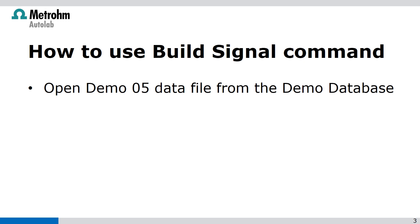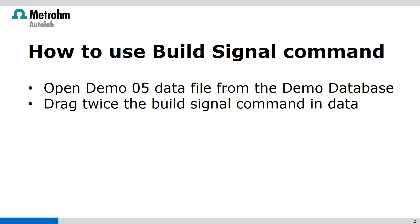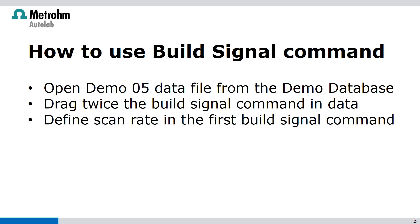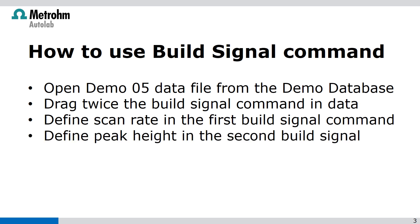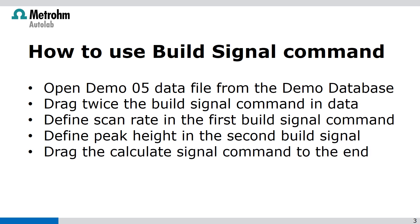First, we have to open demo05 from the demo database, then drag twice the build signal command in the data. In the first build signal command we are going to define the scan rate, in the second build signal command we will define the peak height. Then we drag the calculate signal command to the end to calculate the square root over the scan rate.